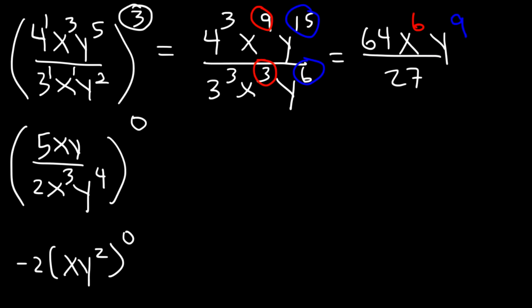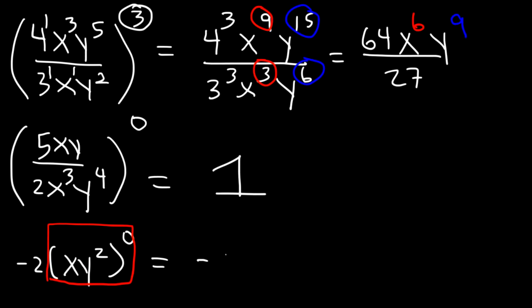Now for the next one: 5xy divided by 2x cubed y to the fourth, raised to the zero power. Anything raised to the zero power is simply equal to 1. And for negative 2 times xy squared raised to the zero power: xy squared raised to the zero power is 1, but the negative 2 is not affected by the exponent, so the negative 2 remains. This gives us negative 2 times 1, which is negative 2.